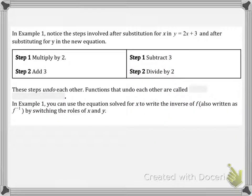So in example one, notice the steps involved after substitution for x in y equals 2x plus 3, and after substituting for y in the new equation. So if we were actually to solve for an x, we plugged in, for example, negative 7 in here, in the x. The first thing we would do would be to multiply by 2. Now notice that the opposite operation, divide by 2, is what we did later. And then the next thing you would do if you were solving for this problem for y, is that you would add 3.